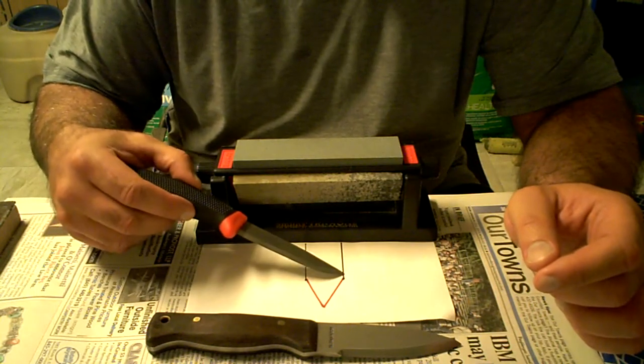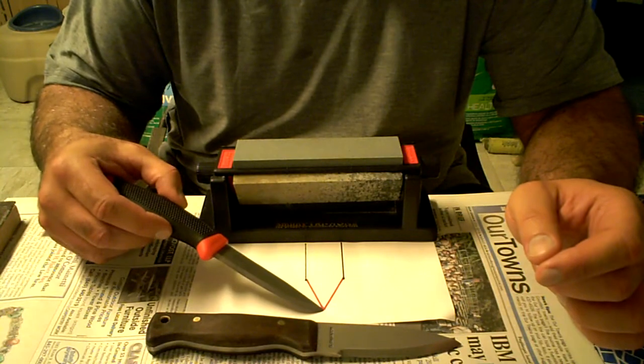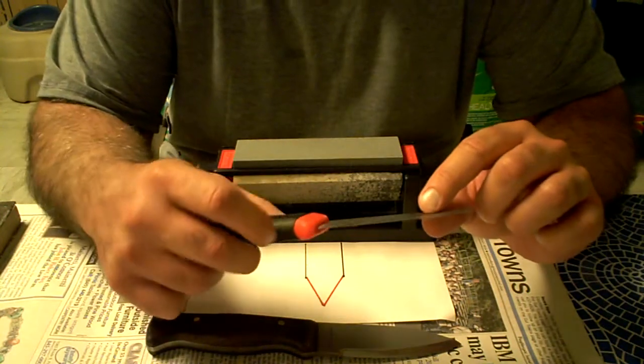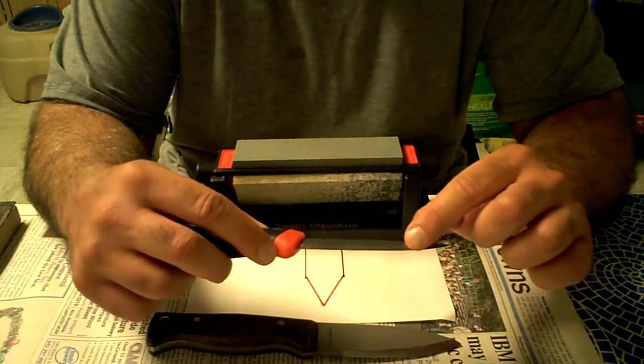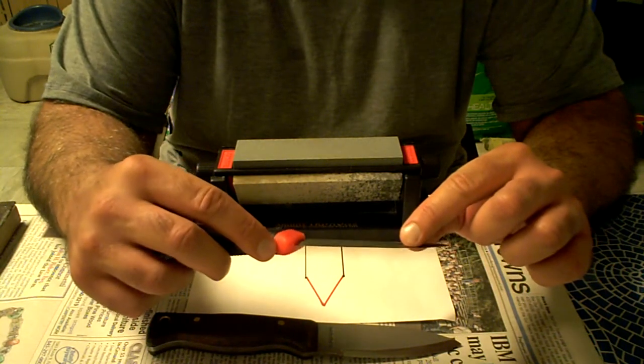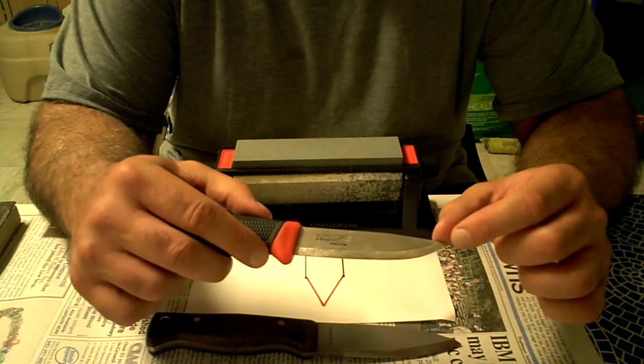It goes all the way down from the thickness of the blade stock right down to the cutting edge. And that kind of gives you a built-in angle guide. You kind of feel where the bevel is real easily because it's so large. So that's a good grind to start learning how to sharpen on.